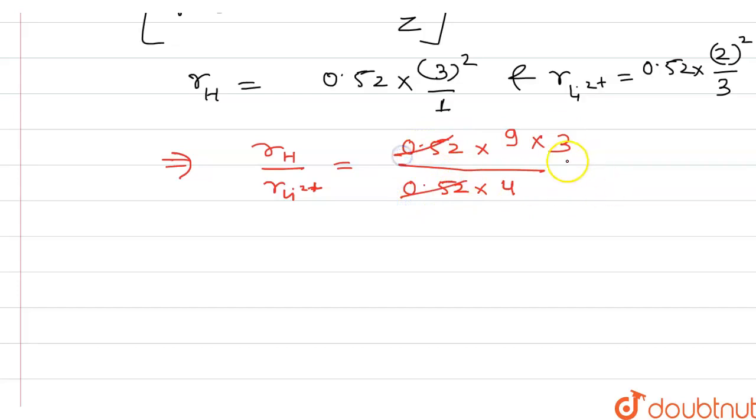So now this will be cancel out and here 27 divided by 4. So ratio will be 27 raise to 4. This is your required answer.